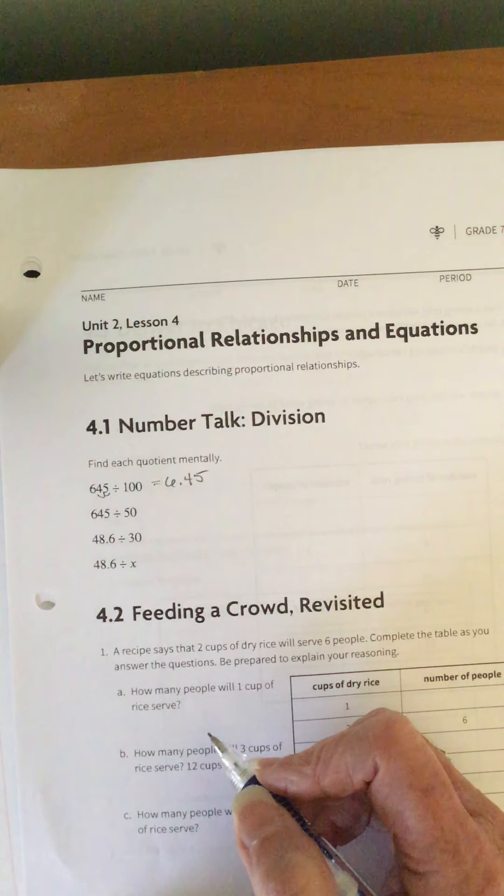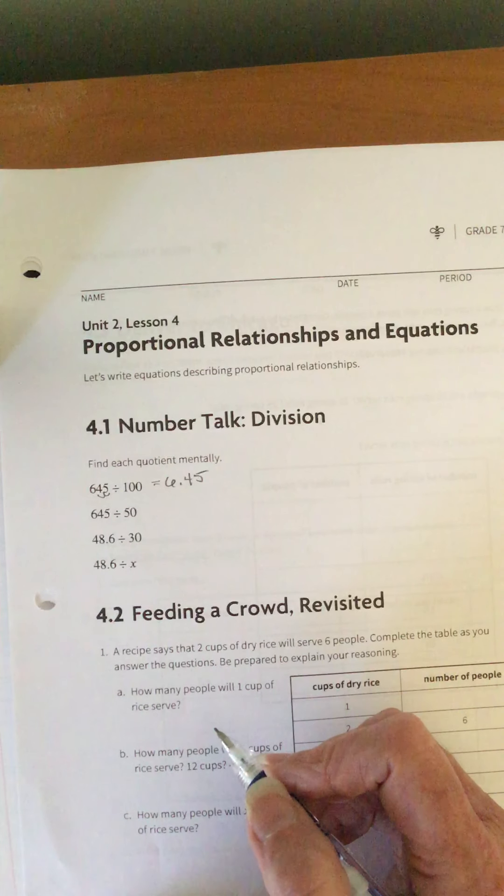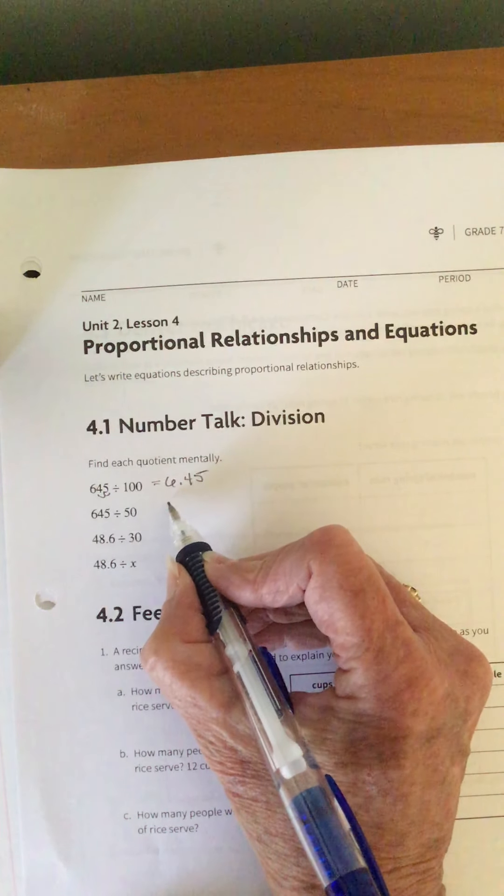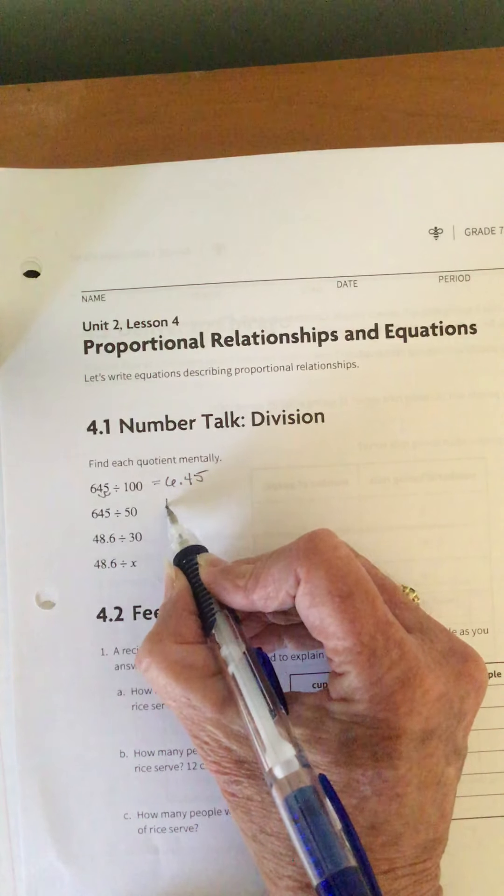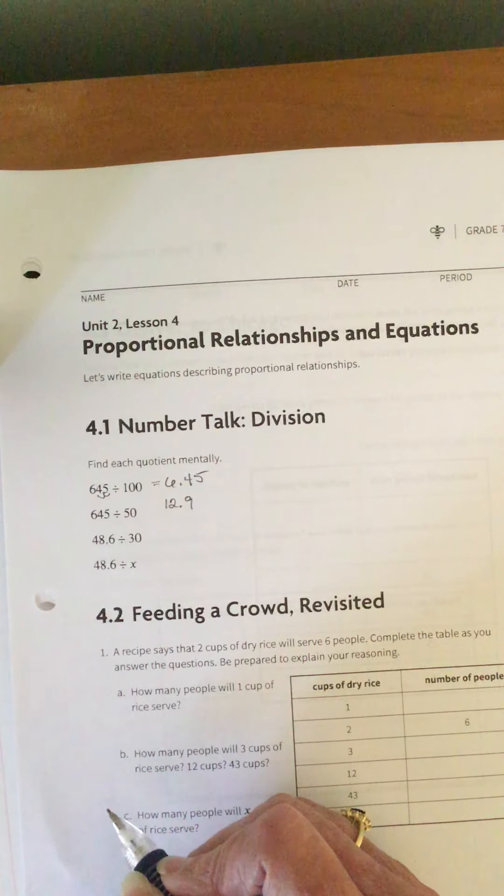Then they're asking us to take the 645 and divide it by 50. So instead of dividing it into 100 different groups, we're only doing 50 different groups. So that means I would have 12.9 in each group.